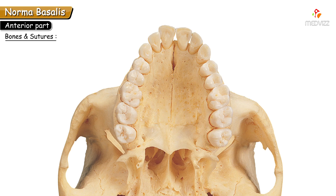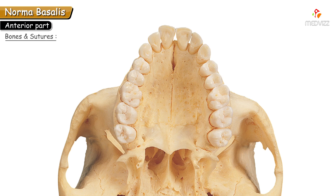Near the posterior border of the hard palate, just next to it, there are faint elevations like curved ridges which are called the palatine crest. Now we shall understand about the openings — the foramina present in the anterior part of Norma Basalis.